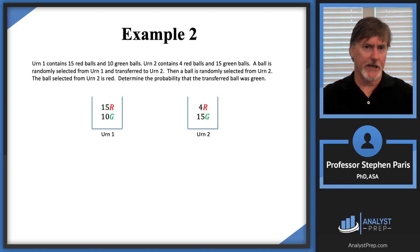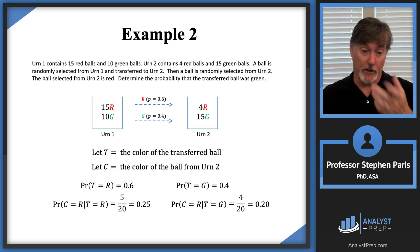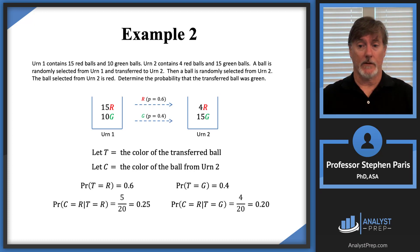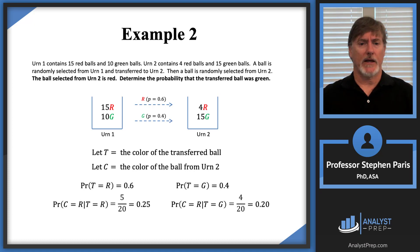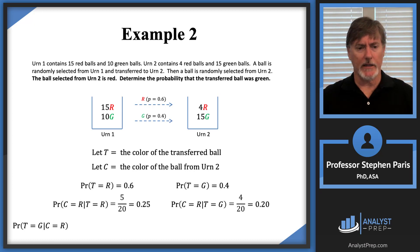Using the same notation and information from the first problem, we're now given that the ball selected from urn 2 is red, and asked to calculate the probability that the transferred ball is green given that the ball selected from urn 2 was red. That's clearly a conditional probability. Looking at the bottom-left probability and comparing it to the probability on the bottom right, I just interchange the two events — and that's a Bayes' theorem problem.